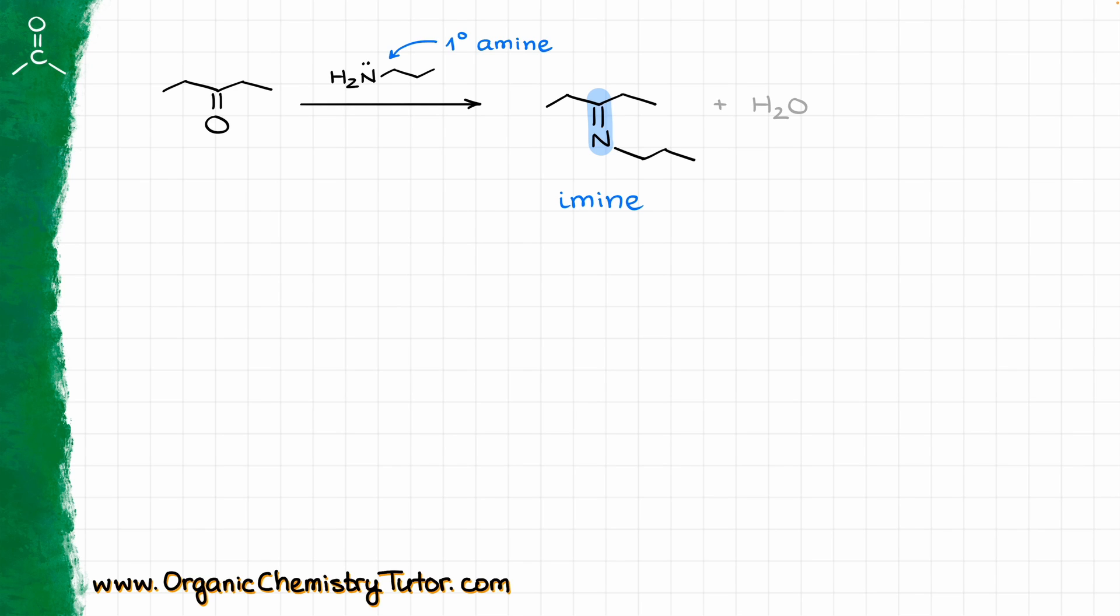When amines react with aldehydes or ketones, they make either imines or enamines depending on the structure of the amine. For instance, a primary amine, like what I have here on the screen, is going to make an imine, a compound with a carbon-nitrogen double bond. If however I take a secondary amine and react that with a carbonyl aldehyde or ketone, I am going to end up with an enamine, a molecule where I have a double bond which is going to be adjacent to the nitrogen and not directly on the nitrogen.